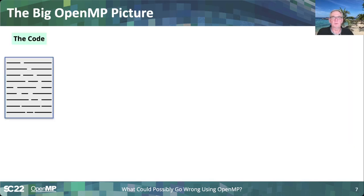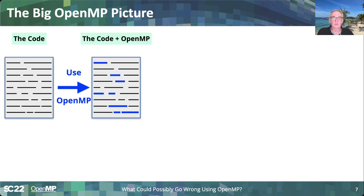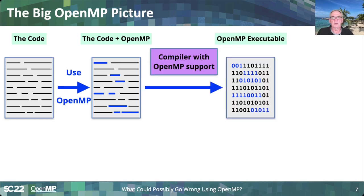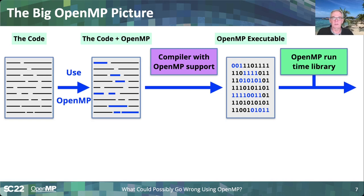Let's first look at the big picture — what is OpenMP really about? We start with an application, a sequential code, and use OpenMP controls to turn it into a parallel program. You add directives, pragmas, and runtime functions to specify and implement parallelism. You then take a compiler with OpenMP support and translate the code to a parallel executable. In doing so, the executable relies on a runtime library to make things happen in parallel.